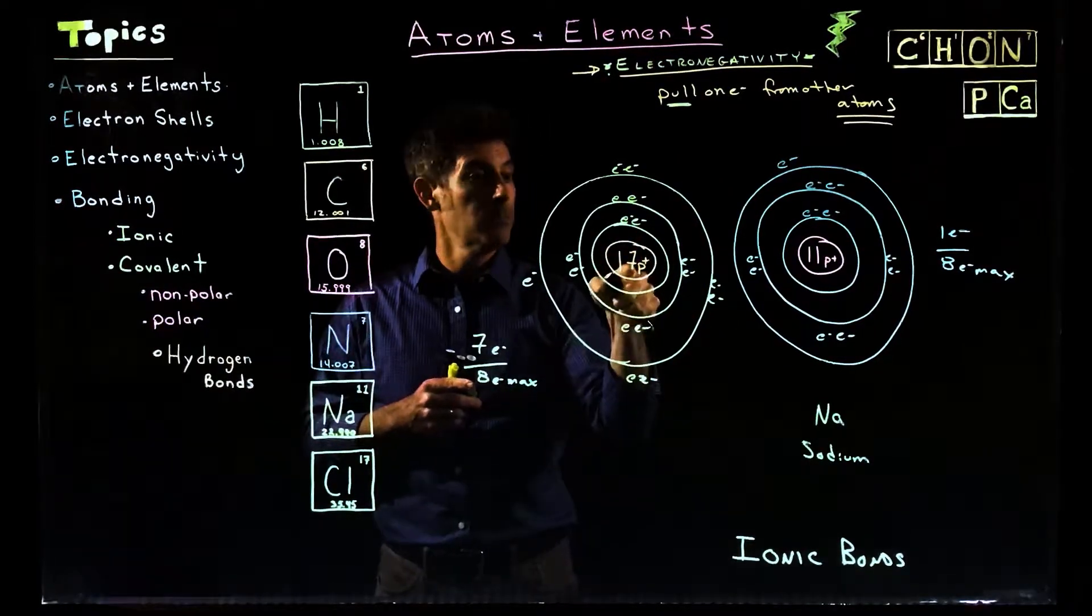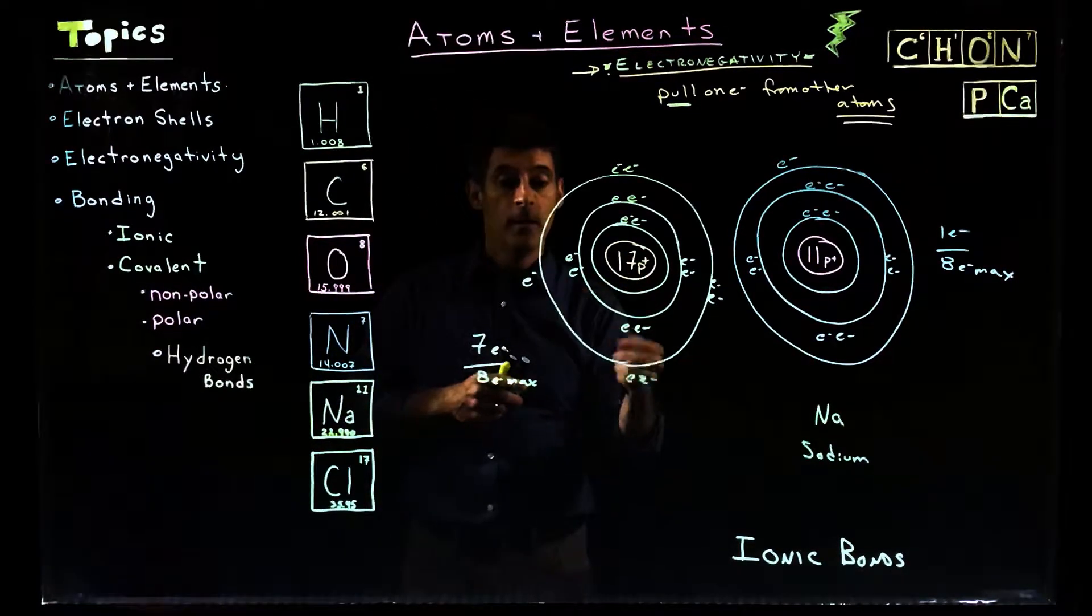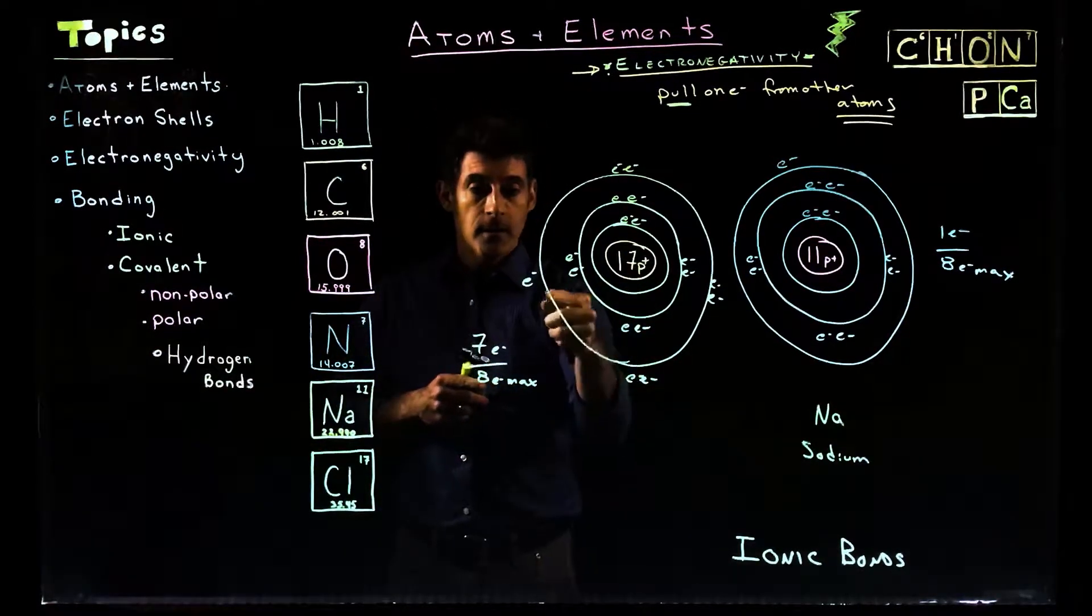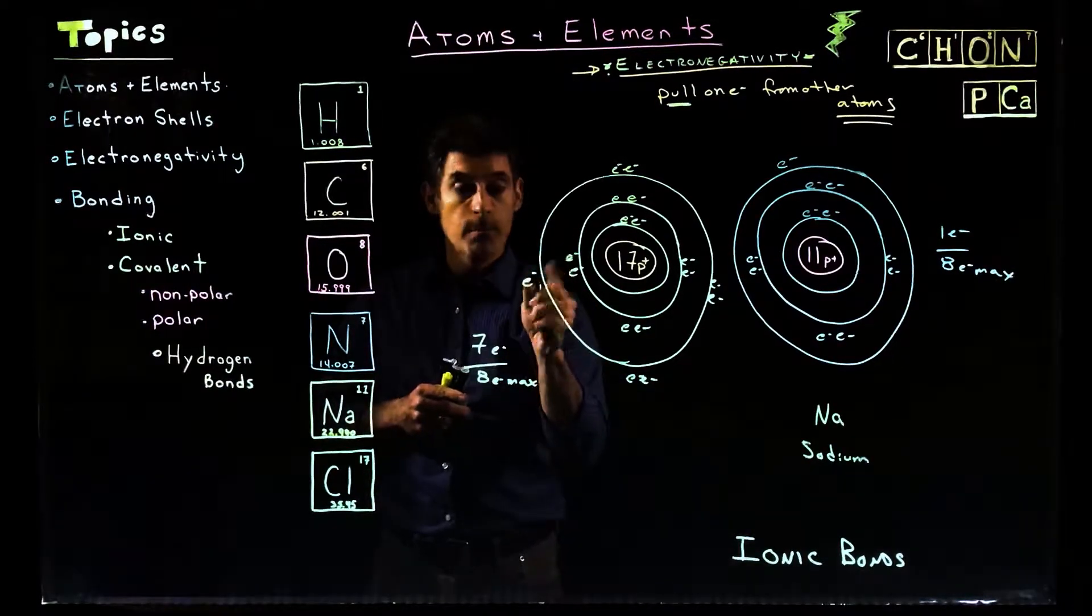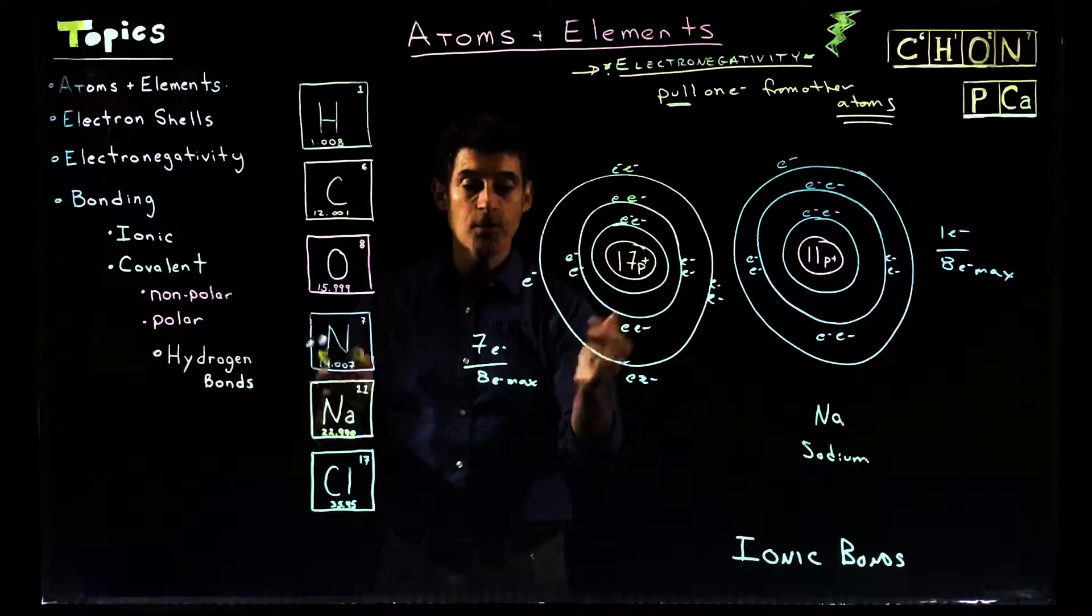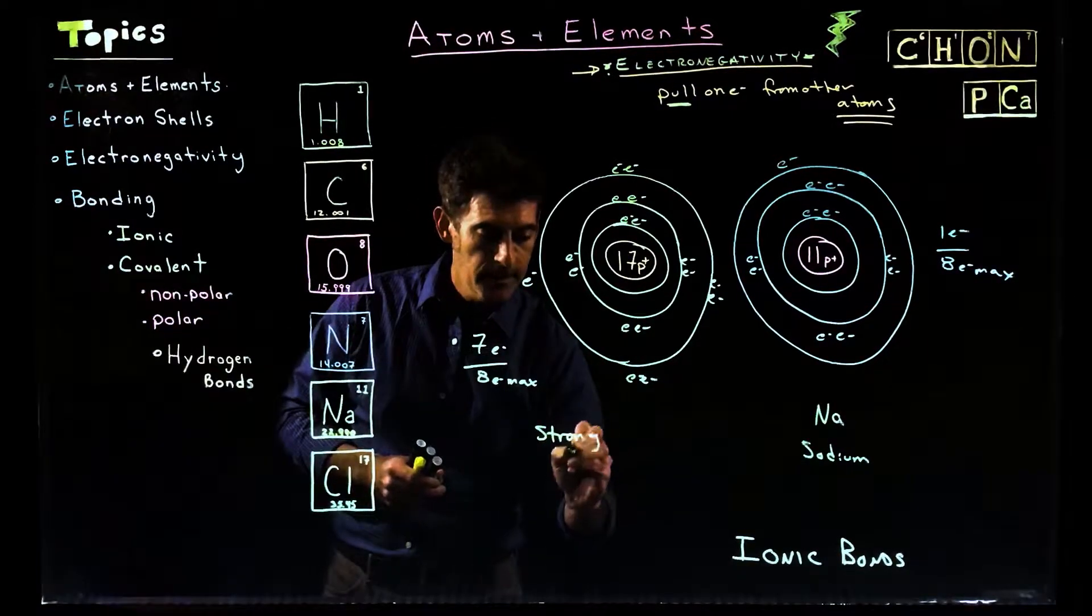Protons matter. So 17 protons, that's a lot of protons. That's a lot of pull. Closer to being full. 7 out of 8, that's really close. Only one more. You need one more electron and you're full. So you would think this one has a pretty strong electronegativity.